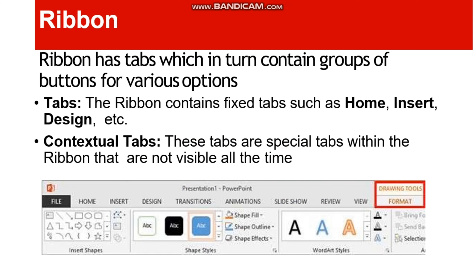Next is the ribbon. There are multiple ribbons in PowerPoint such as Home, Insert, Design, Animation, and Transitions. In version 2007 or other versions, the tabs may look slightly different from 2013, but all the functions are the same. There are also contextual tabs — special tabs within the ribbon that are not visible all the time, like the Format tab, which appears when you insert a picture, shape, video, or audio.